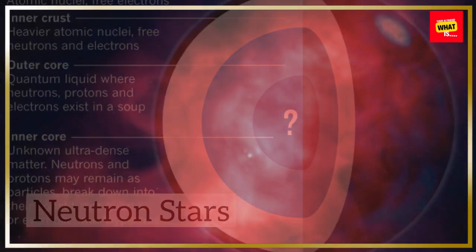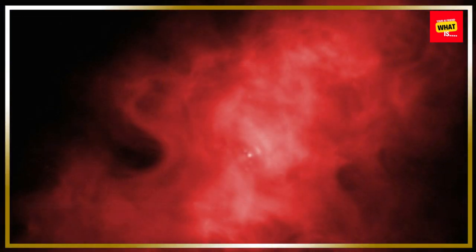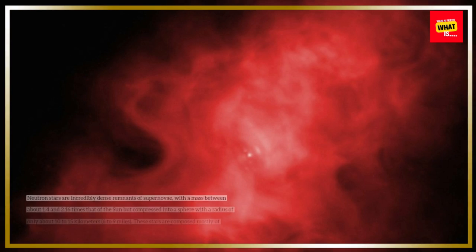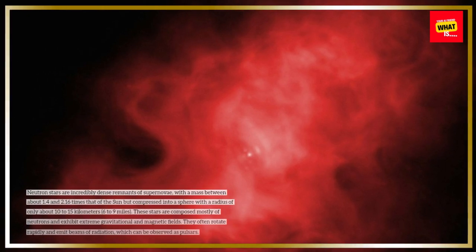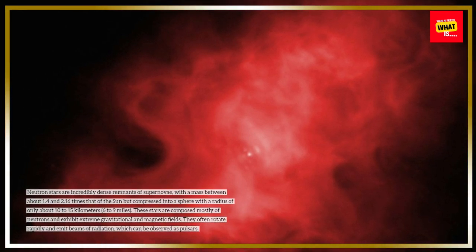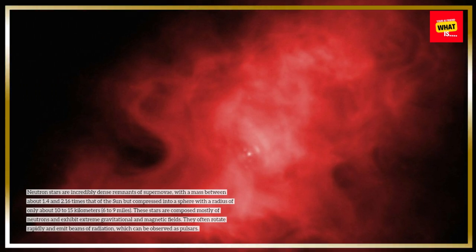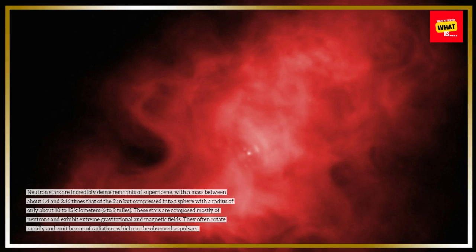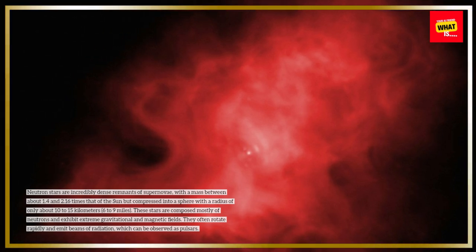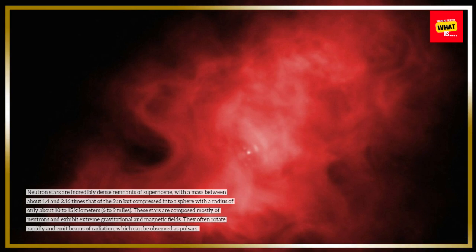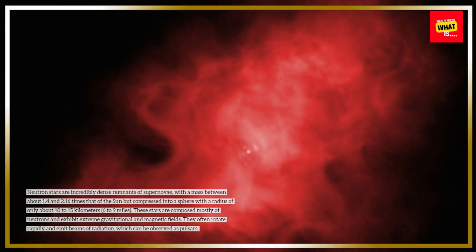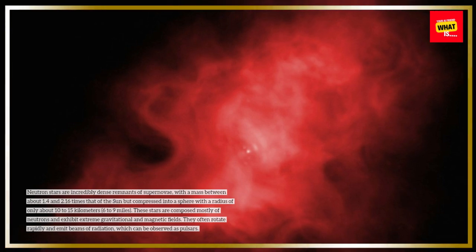Neutron Stars. Neutron stars are incredibly dense remnants of supernovae, with a mass between about 1.4 and 2.16 times that of the Sun, but compressed into a sphere with a radius of only about 10 to 15 kilometers — 6 to 9 miles. These stars are composed mostly of neutrons and exhibit extreme gravitational and magnetic fields. They often rotate rapidly and emit beams of radiation, which can be observed as pulsars.